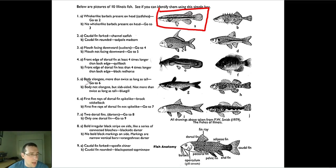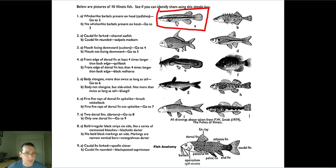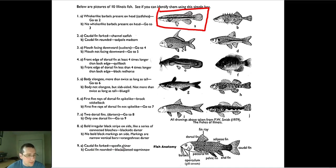At step seven: do I have two dorsal fins? If yes, it's a darter and I go to eight; if not, I go to nine. I only see one dorsal fin, so I go to nine. Is the caudal fin forked? If yes, it's a spot-fin shiner. If the caudal fin is rounded, it's the black-spotted top minnow. That's the fish identified.